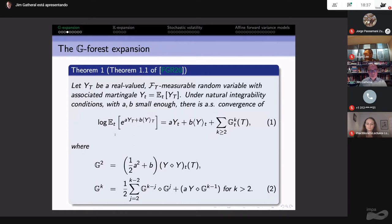Here is theorem 1.1 from our recent paper. Let Y be a real valued random variable with an associated martingale. Under natural integrability conditions, this expansion converges. This is giving you an expression for the moment-generating function or the characteristic function. For me, as a physicist, they're the same thing, but Peter Fritz keeps trying to educate me that they're not.